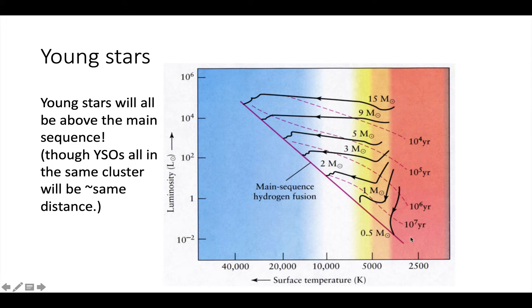The dashed lines here are isochrones or lines of constant age. So any star that's near that line is only 10 to the 4 years old, here 10 to the 5 years old, here 10 to the 6, a million years old, and here 10 to the 7. So you can tell immediately that the high mass stars evolve quickly and the low mass stars take much longer. But here's the really important part: they're all above the main sequence.